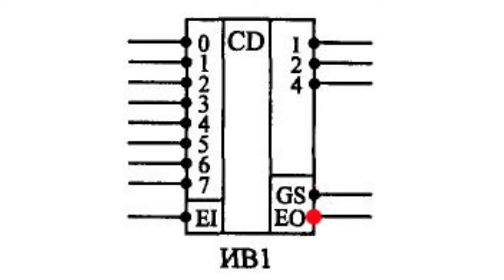The EO output allows combining several scramblers to increase the code length. The EO output becomes active in the absence of input signals. However, it needs an EI signal to start working.